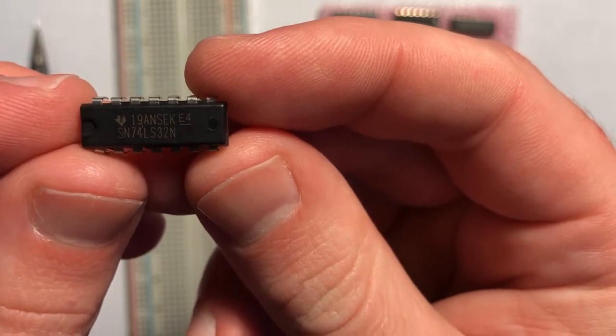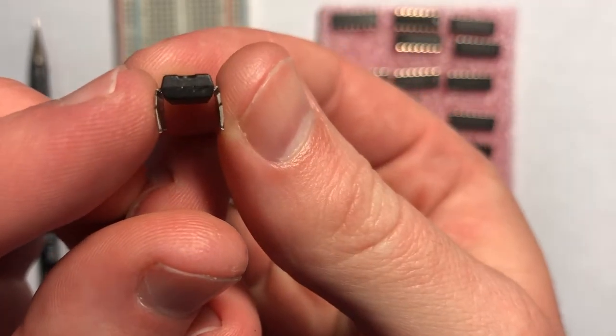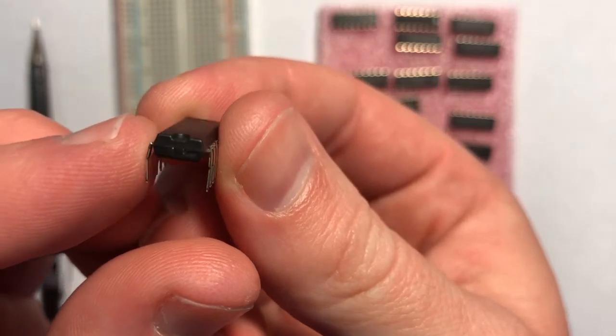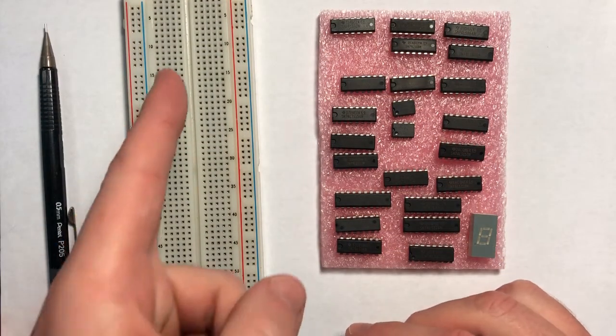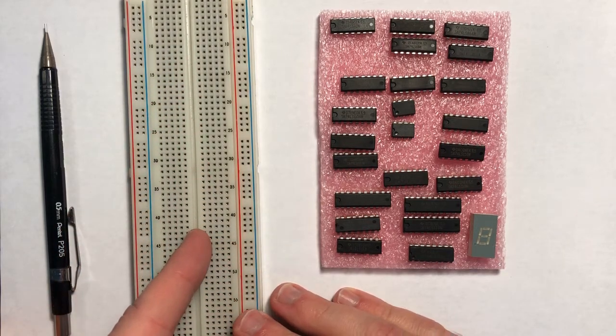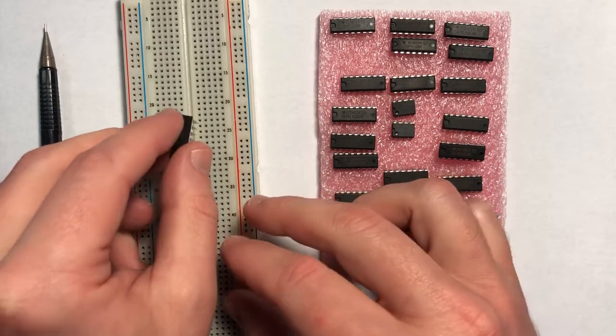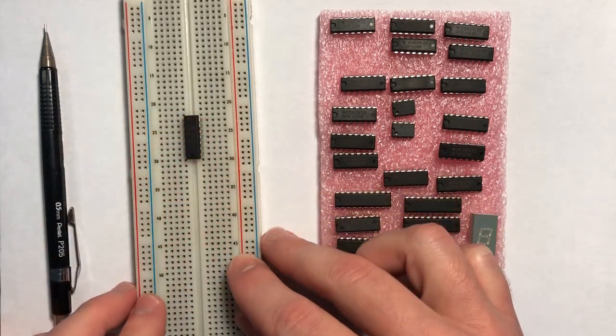When we're placing our ICs in the breadboard, we want to make sure that the pins are at roughly a 90 degree angle to this black plastic casing. When placing them on the breadboard, we actually want our IC to straddle this middle gap here so that none of the pins are connecting. We just line it up and firmly place it into the breadboard.